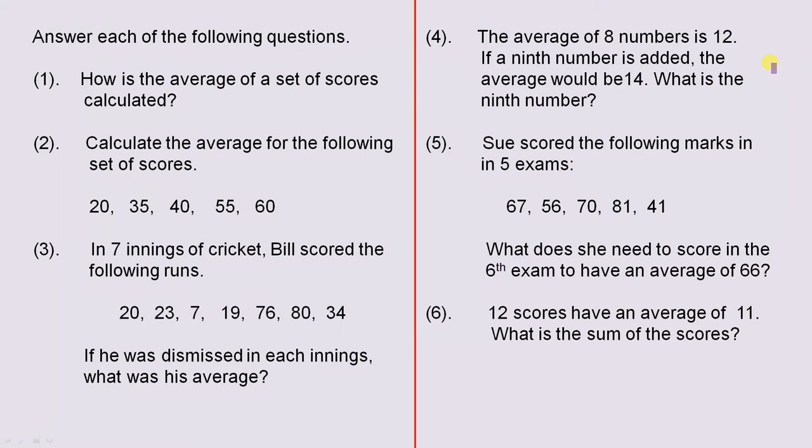Next one: the average of eight numbers is 12. If a ninth number is added, the average would be 14. What is the ninth number? This is a little bit different. It's not as straightforward as just calculating an average. But there is an example in the lesson and it will show you how to do this.